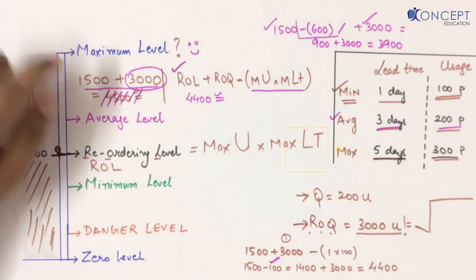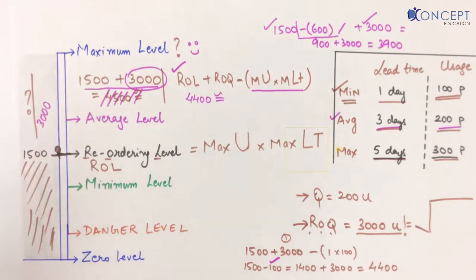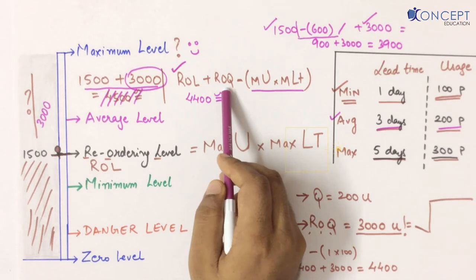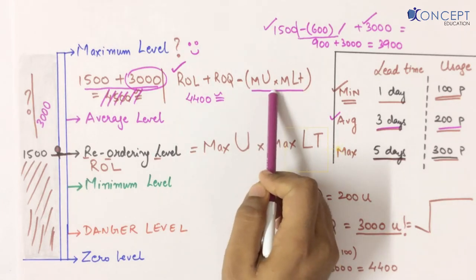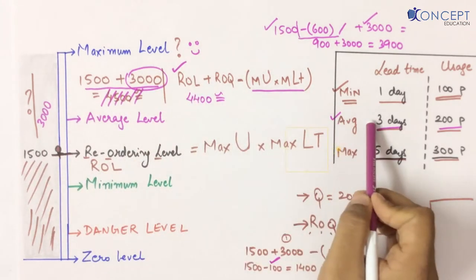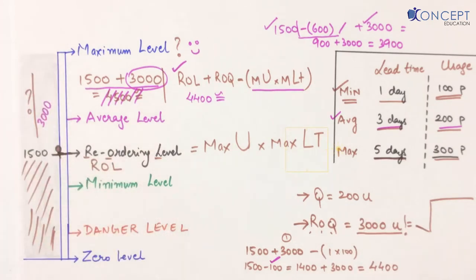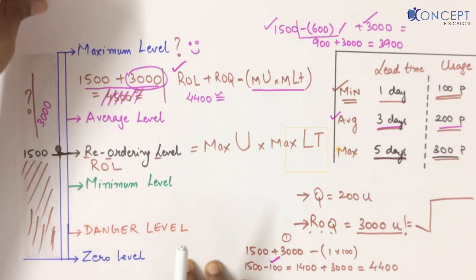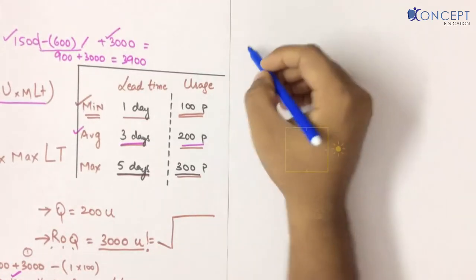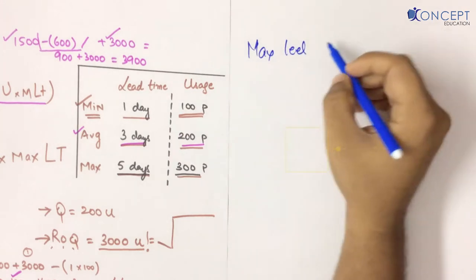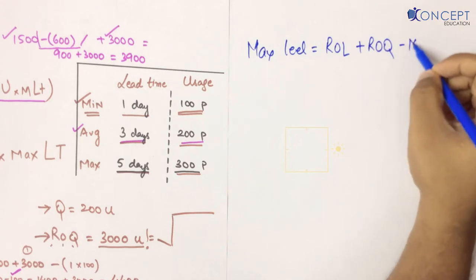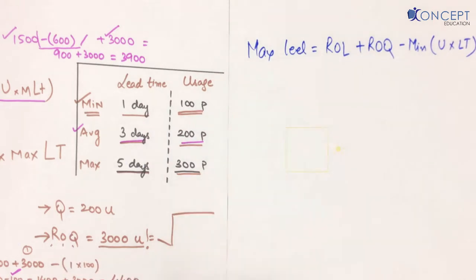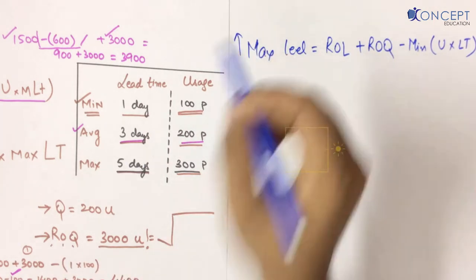What is our maximum level formula? If someone asks what can be the maximum level of stock over the whole year, the answer is: when we place an order of ROQ at the ROL point, and until it arrives, very minimum activity happens — only then will our tank reach the maximum level. Otherwise with average or maximum activity, it will never reach the maximum level. Maximum level = ROL + ROQ − (minimum usage × minimum lead time), so that the least amount is subtracted during lead time, giving us the true maximum level.